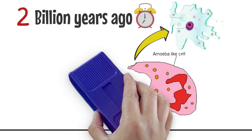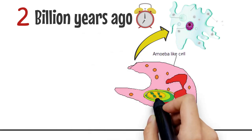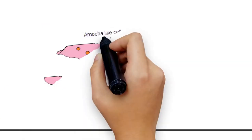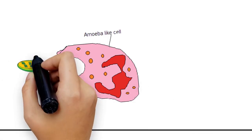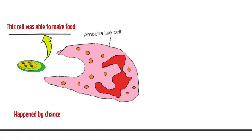But instead of being digested, the cyanobacterium survived while also gaining an extra membrane around it from being ingested. The larger cell was actually able to use the cyanobacterium to make food for itself, an efficiency that may have just happened by chance.